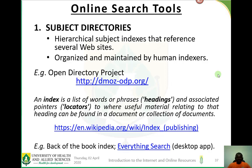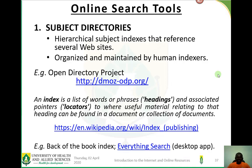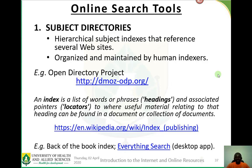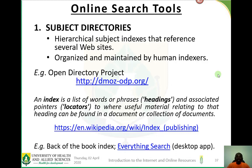An index is simply a list of words or phrases — which we may call headings — and their associated pointers or locators to where useful material related to that topic or heading can be found. This definition can be found in the given Wikipedia link. Examples of indexes include the back-of-the-book index that we see in most textbooks.